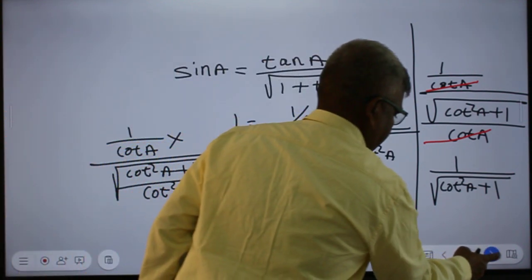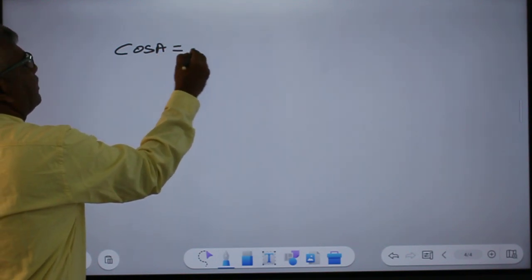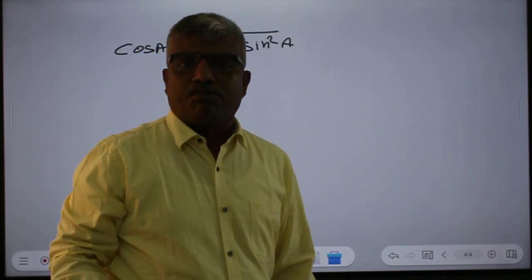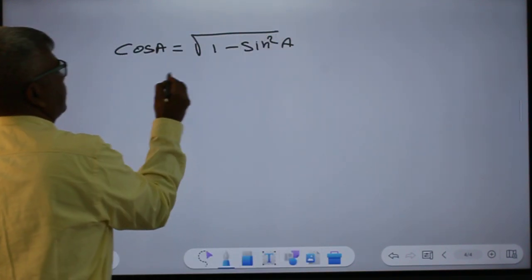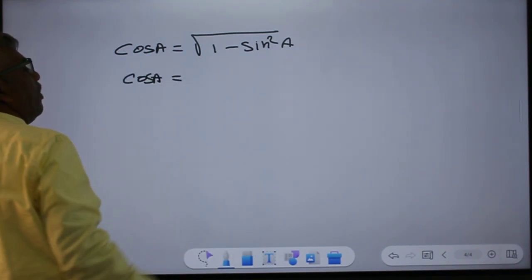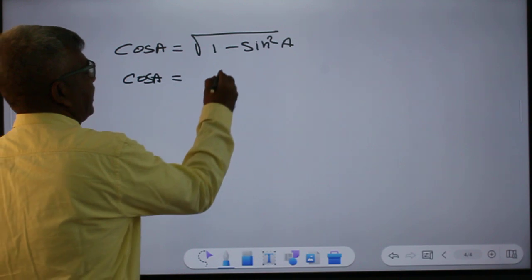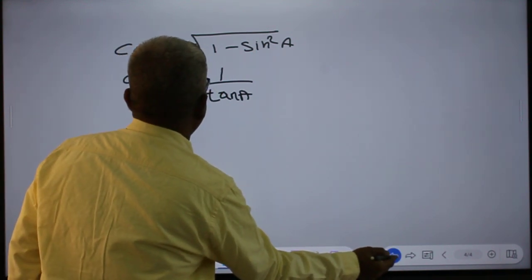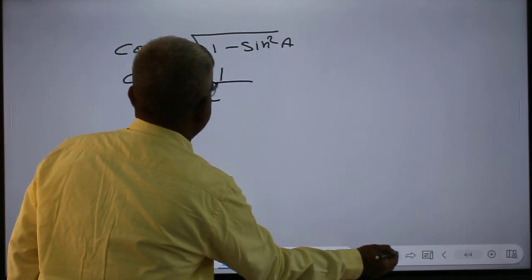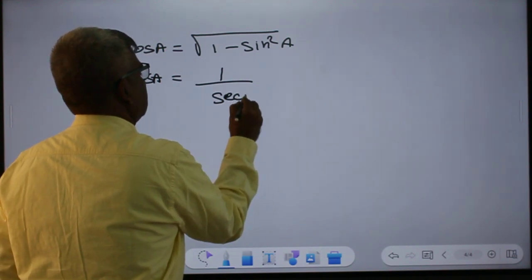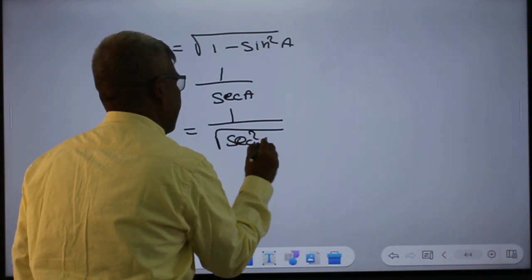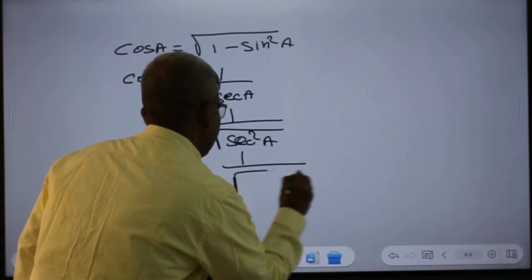Now let us see cos A. We will express cos A in all modes. Cos A equals the square root of 1 minus sin squared A, since cos squared A equals 1 minus sin squared A. Cos A in terms of tan A: cos A equals 1 over secant A, and since secant squared A equals 1 plus tan squared A, we get cos A equals 1 over the square root of 1 plus tan squared A.